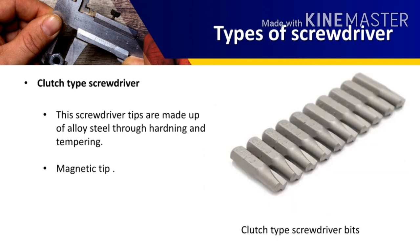The clutch type screwdriver is similar to the hexagonal head screwdriver and is available in different size bits. The tip of the clutch type screwdriver is shaped like the English letter S. These bits are made of high carbon steel and alloy steel. The tip also has magnetism, which is very useful to remove or tighten screws that are below the surface.